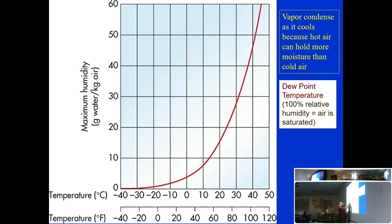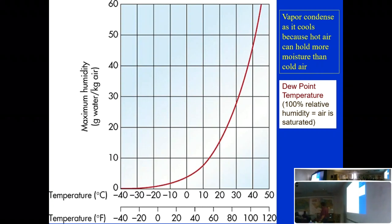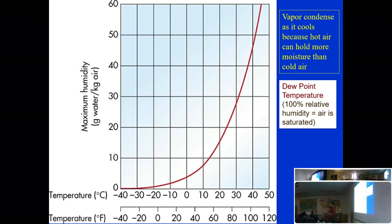Let's say a parcel of air has 15 grams per kilogram of water and it's at 40 degrees Celsius. As it cools down and hits the saturation point — the dew point — it starts condensing out its water. That's when clouds and fog begin to form. Once condensation produces tiny droplets, those droplets need to coalesce and get heavy enough to fall out of the atmosphere as precipitation.